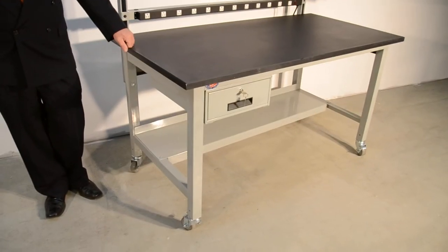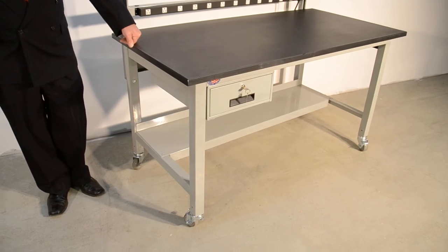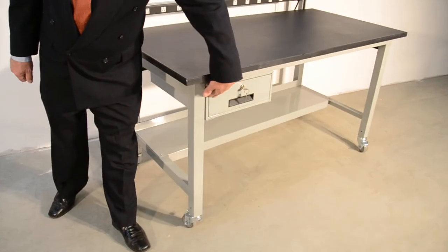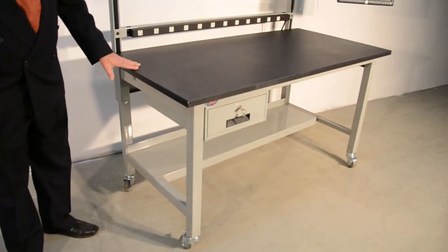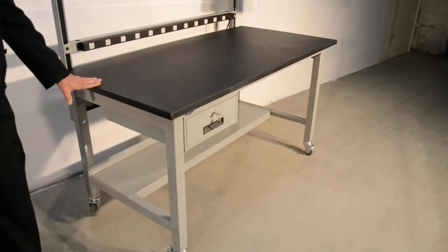Again, our Model HD comes with a work surface, a left leg, a right leg, a front rail to support the work surface, and a back rail. Now we have this one accessorized with several different modular accessories.